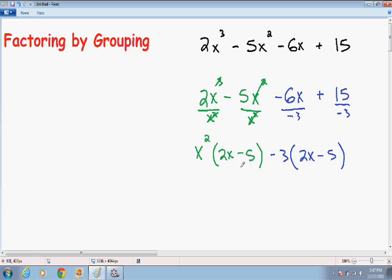Now notice how both these parentheses are exactly the same. Inside the parentheses we have 2x - 5. If the parentheses are not exactly the same, that means that this problem is not factorable or that you made a mistake along the way. So these parentheses must be exactly the same in order to do factoring by grouping.